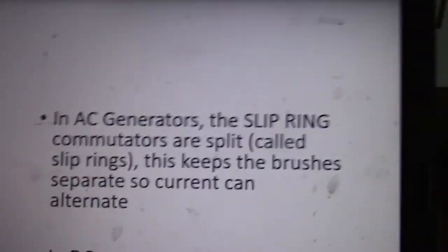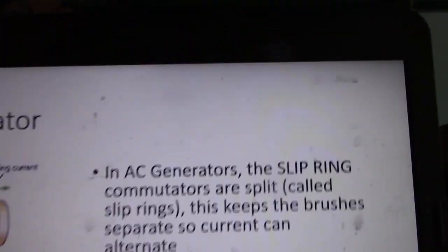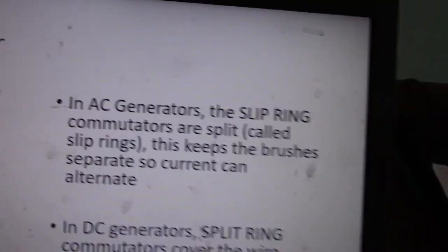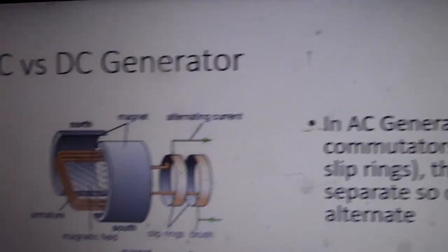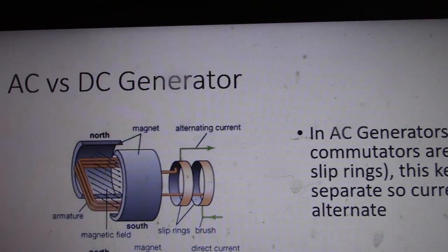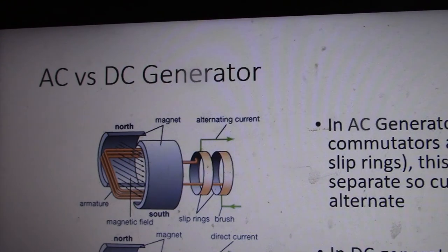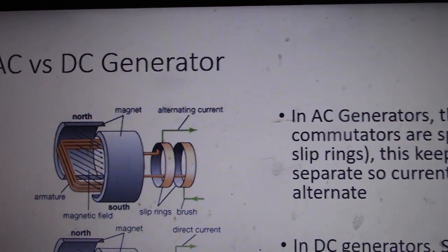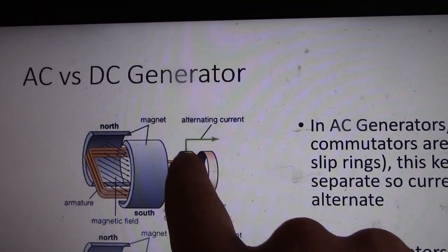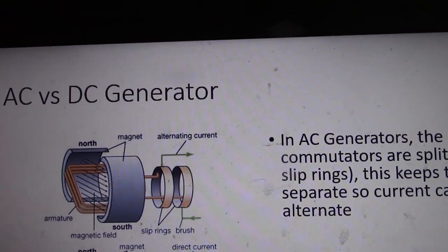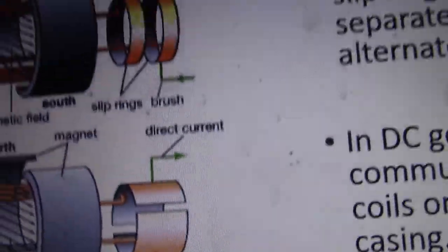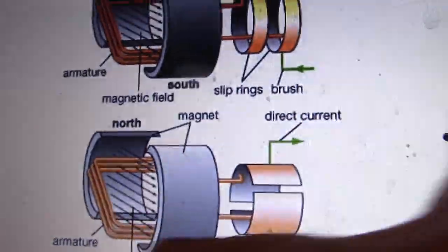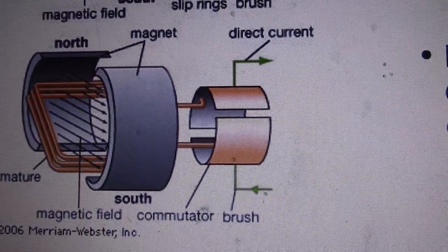In AC generators you have multiple contacts — copper commutators that are the point of electrical contact for the brushes. It's not called a split ring commutator; it's called a slip ring because we can slip these rings on and off. The slip ring commutator is for the AC generator, with two points of electrical contact for the brushes. In DC generators we have one point of electrical contact — that's actually called a split ring because it completely splits the two sides of the armature coils.